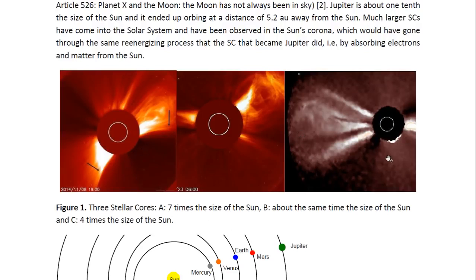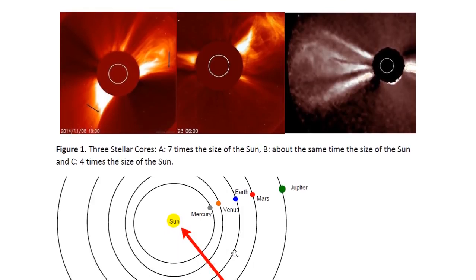And here you see three of these stellar cores. And this one turned out to be seven times the size of the Sun, we're going to call it A. And this one, about the same size of the Sun, we'll call it B. And this one was about four times the size of the Sun and we're going to call it C.